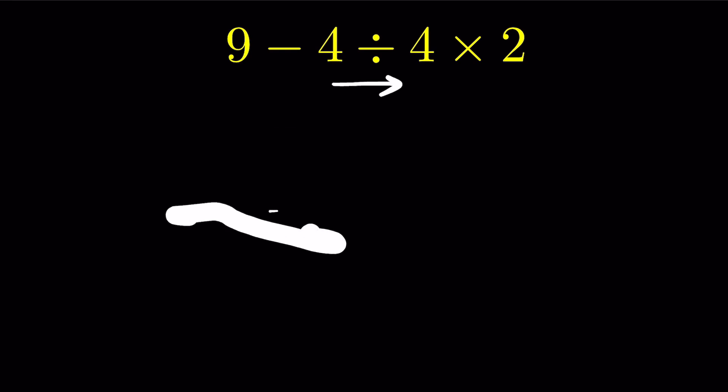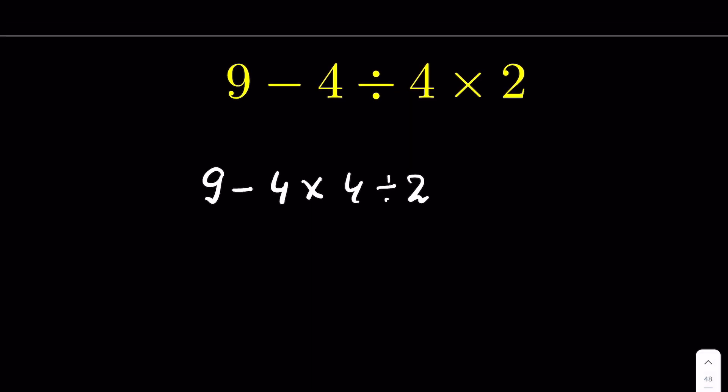What if the question was 9 minus 4 multiplied by 4 divided by 2? Why is the left to right rule important? You see, here whether you do multiplication first or division first, there won't be much difference—the answer will be the same.